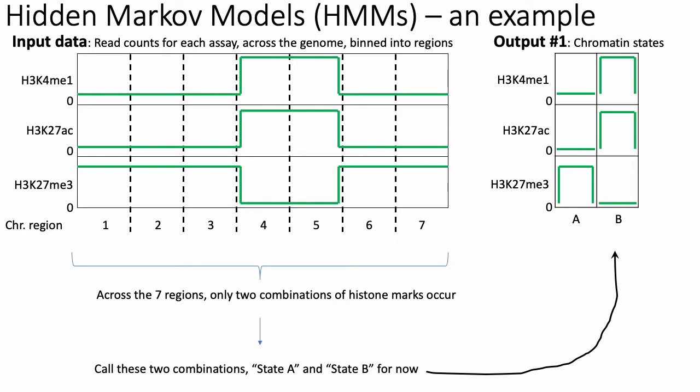In terms of output number one, HMMs try to tell you about chromatin states — unique combinations of histone marks that occur across the genome. In this hypothetical example, we've divided the genome into seven different regions. Although we've assayed three different marks, meaning theoretically you could have 2 to the 3 or eight possible combinations, in this hypothetical genome we actually only see two unique combinations of histone marks. In one case, only K27 trimethylation is observed in regions one, two, three, six, and seven. In the other case, K4 monomethylation and K27 acetylation occur together in regions four and five.